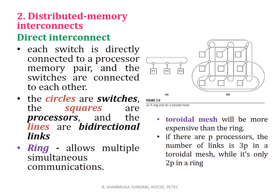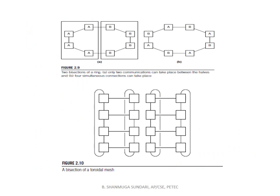In distributed memory interconnect, each switch is directly connected to a processor-memory pair and switches are connected to each other. In the diagram, circles represent switches, squares represent processors, and lines represent bi-directional links. A ring allows multiple simultaneous communications. The toroidal mesh is more expensive than a ring — in a toroidal mesh with P processors, the number of links is 3P, whereas in a ring it is only 2P. In the ring, 2 communications can take place between halves, while in a second bisection, 4 simultaneous communications can occur.